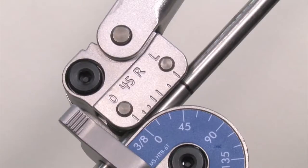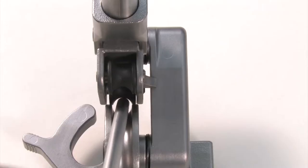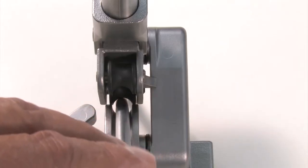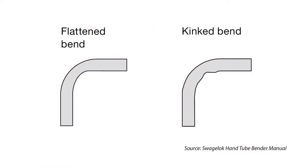Choose a bender that matches the outside diameter of the tube that you are working with. This bender is for 3/8 inch OD tubing. This tube is too small for the bender dies. This may cause flattening or kinking at the bend.